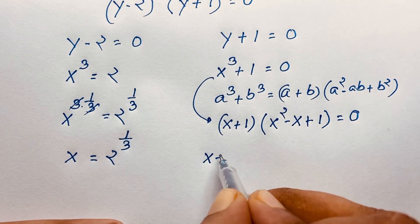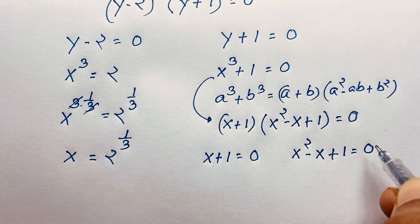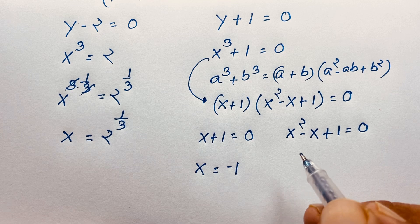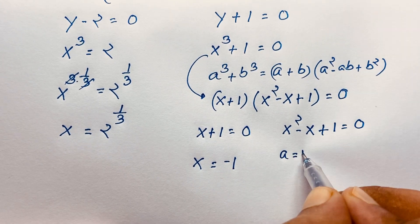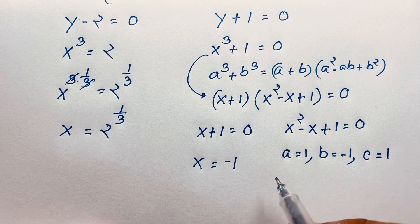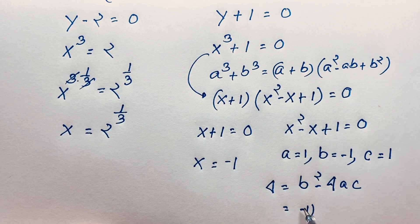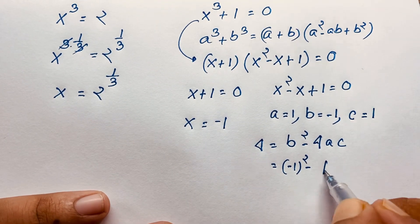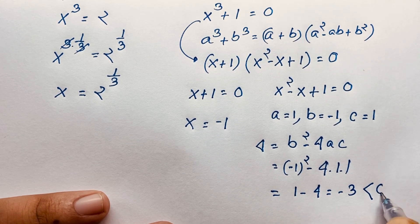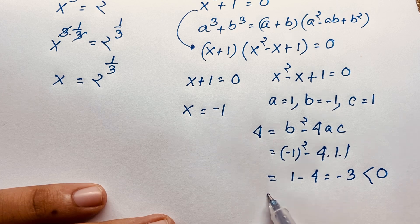Then we find x plus 1 is equal to 0, and x squared minus x plus 1 is equal to 0. Moving 1 to the other side gives x is equal to negative 1. For the quadratic x squared minus x plus 1 equals 0, here a is 1, b is negative 1, and c is 1. The discriminant is b squared minus 4ac: negative 1 squared minus 4 times 1 times 1, which is 1 minus 4, giving minus 3. This is less than 0, so we get two complex number solutions — no real solution here.